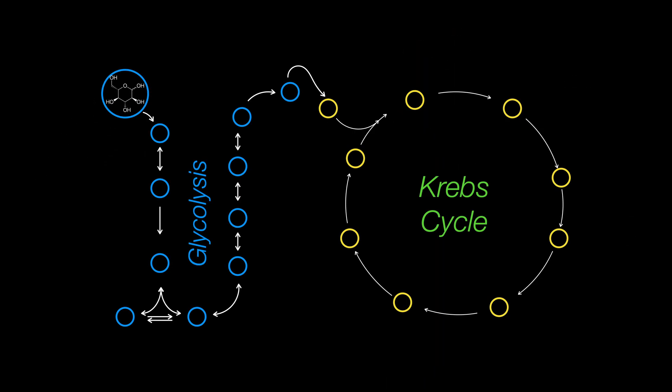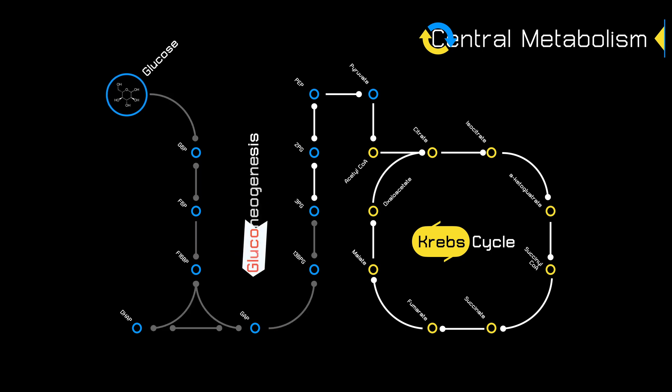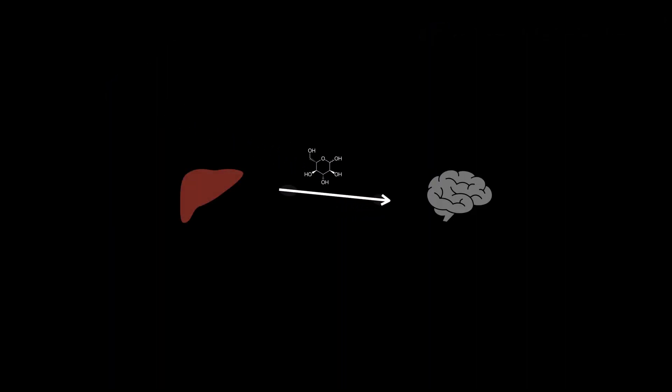Not only that, if you look at the chemicals in central metabolism, you can actually turn these back into glucose through a pathway known as gluconeogenesis. This happens in the liver when it senses that your brain is starved of energy since it can't survive without glucose.